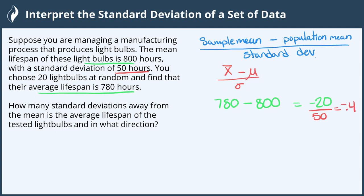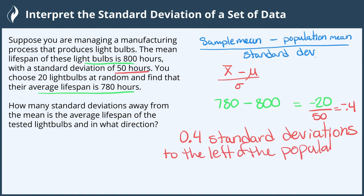This means that we are not quite half of a standard deviation below the population mean. So we can write that the sample is 0.4 standard deviations to the left of the population mean. And now we're all done.